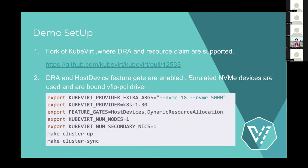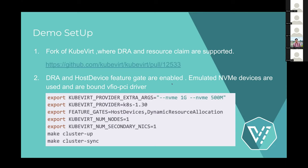For the demo setup, we are not integrating the KubeVirt changes directly — they are maintained in a draft pull request. The DRA PCI driver itself is maintained in a separate repo under KubeVirt called DRA PCI driver. Links will be in the references. For the demo, we use emulated devices of size 1 GB and 500 MB, Kubernetes 1.30, and the feature gates 'host devices' and 'dynamic resource allocation', introduced in this pull request fork. After that we sync up the cluster and check updates.